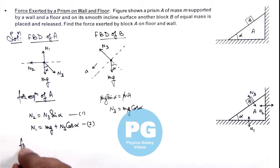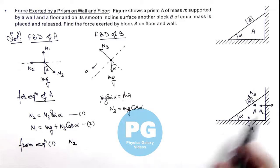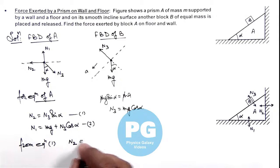Now we can write from equation 1, the value of N2 which is the force exerted by wall on the prism can be given as mg sine alpha cos alpha.